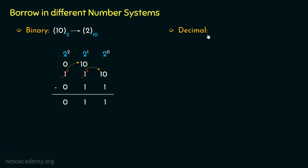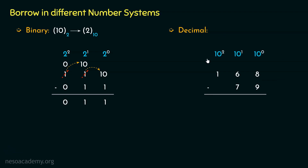Now, what about decimal? In order to understand the concept of borrow in decimal as well, let's perform a subtraction. The minuend is going to be 168, and the subtrahend is 79. In order to have better clarity, let's consider the place values first, and then begin the subtraction.